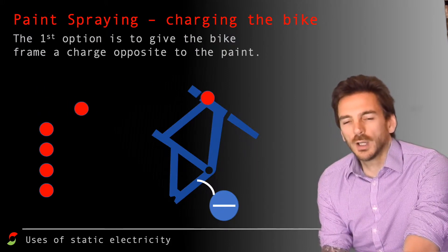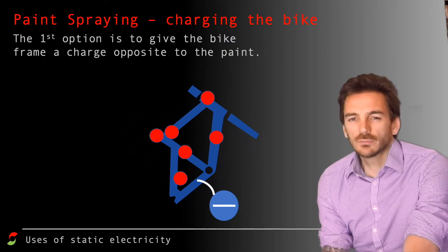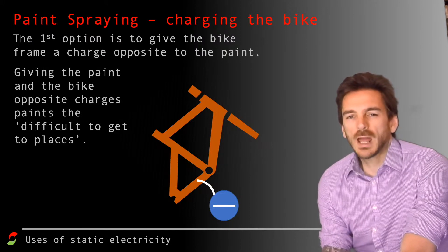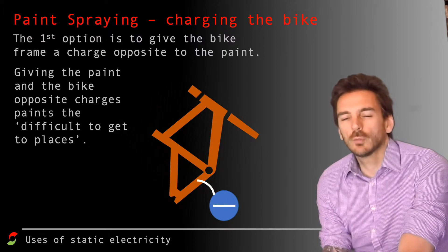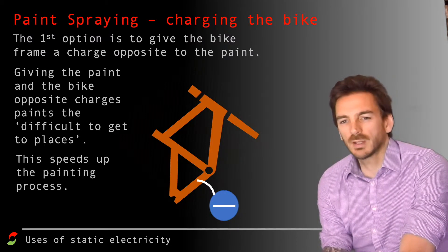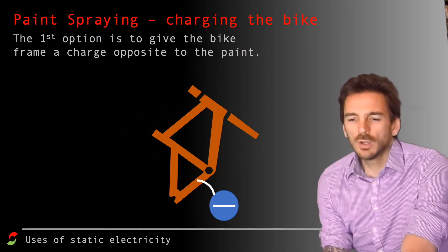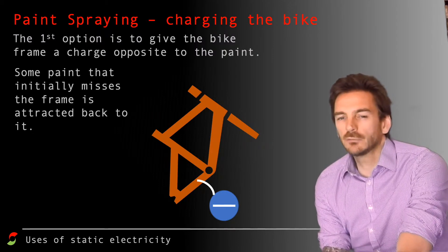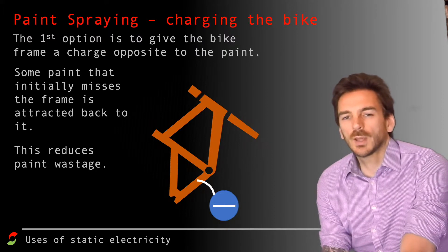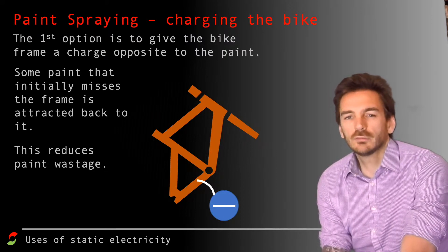As the paint droplets or powder move towards the bike frame, they get attracted to it. All those difficult places, nooks and crannies of the bike get covered evenly with paint, just like the easy bits. This speeds up the painting process - you don't have to manually ensure all those difficult-to-reach parts have a coating of paint. Paint that misses the frame initially will also get attracted back, making sure the back of the bike is painted evenly as well. This not only speeds up the painting process but produces less wastage - it's better than normal paint spraying.